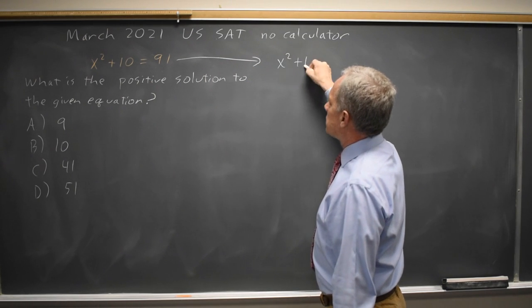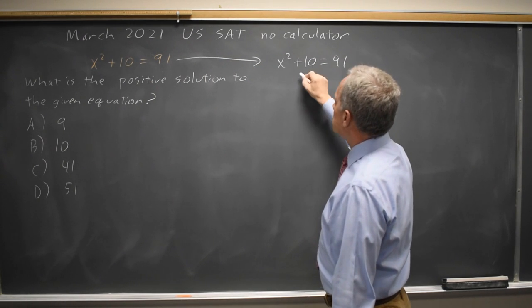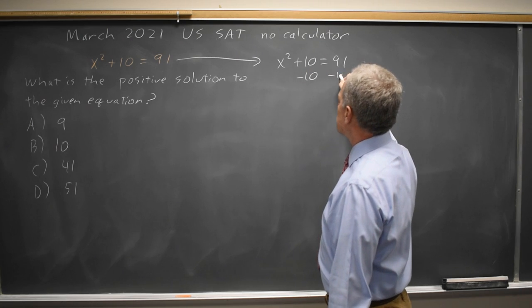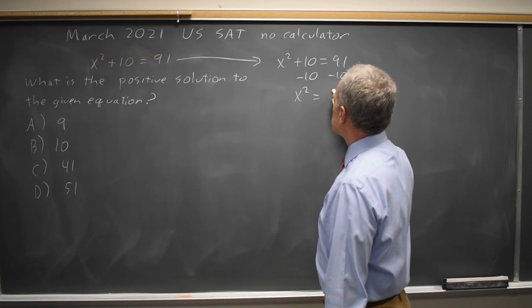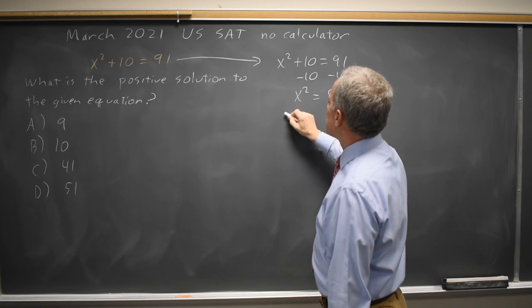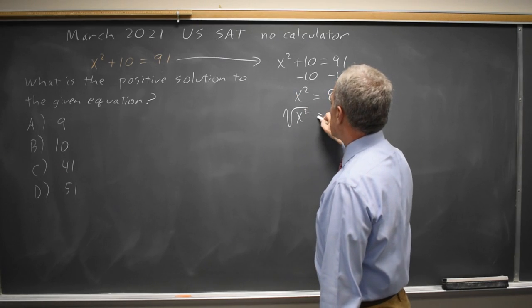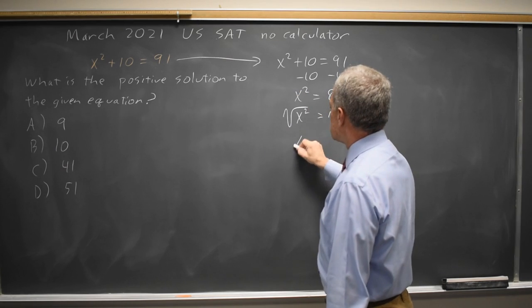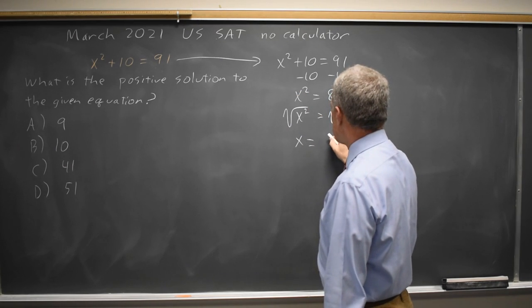If I have x²+10=91, to get the x² by itself, I subtract 10 from each side, giving me x²=81. Taking the square root of both sides, √(x²)=√81, so x equals positive or negative 9.